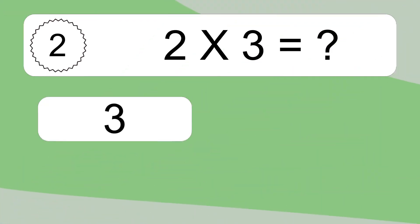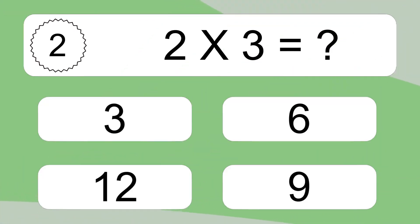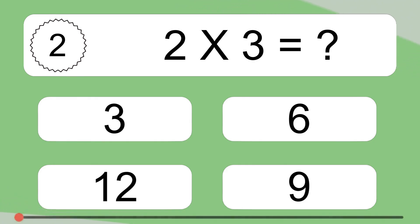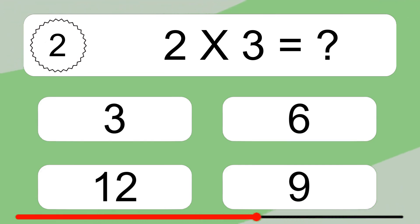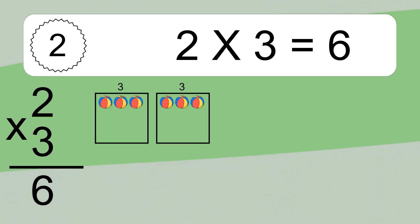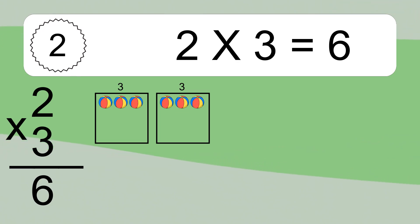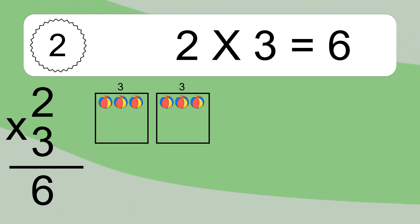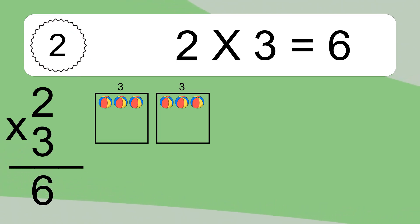2 times 3 equals what? 2 times 3 equals 6. We have 2 boxes, and each box has 3 colorful balls inside. If you count all the balls in all the boxes together, you will have 2 times 3 balls. This equals 6 balls.